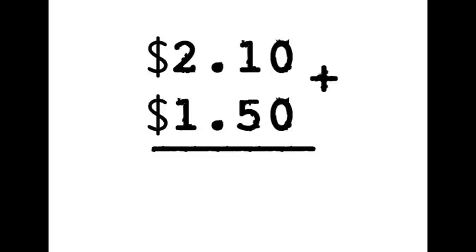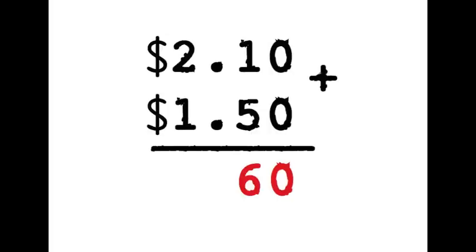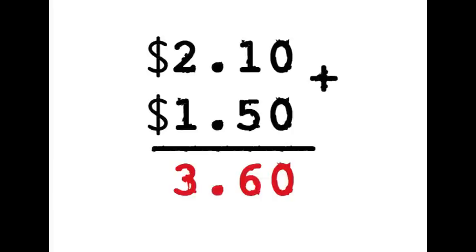This is a bit harder: two dollars and ten cents plus one dollar and fifty cents. Again, we start off with adding the cents column, which is zero. The next column — one plus five — adds to six, so so far we have sixty cents. We put the decimal point in the same place. And two plus one equals three. Three dollars sixty.